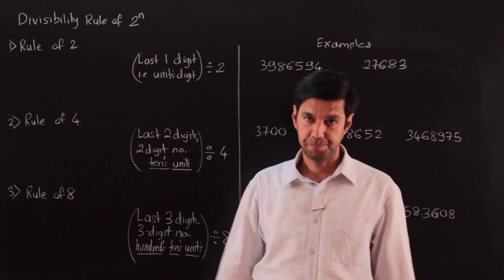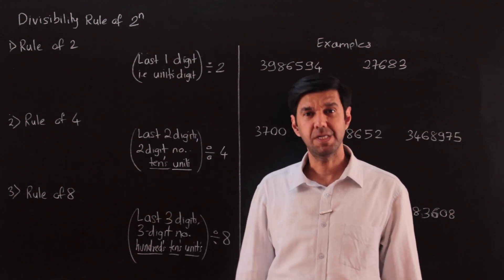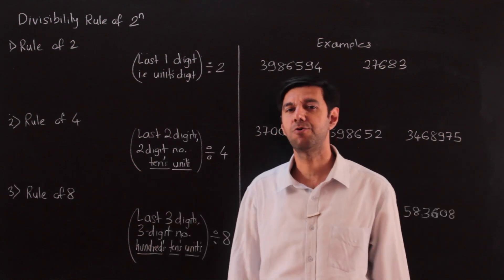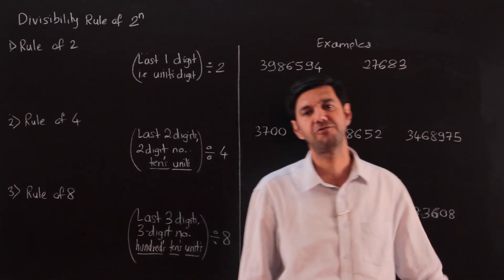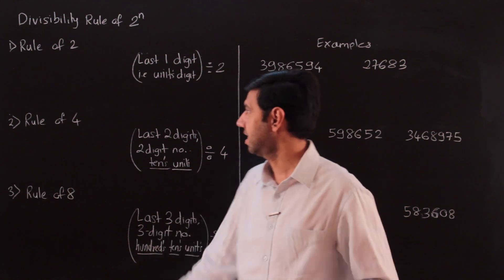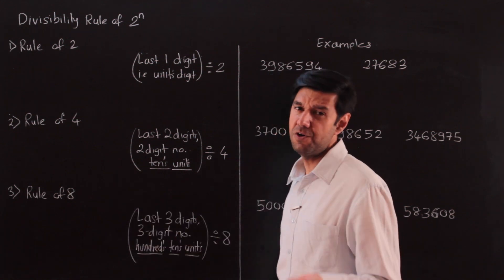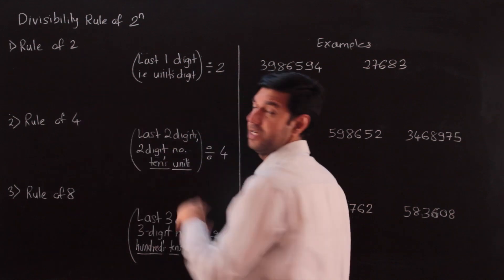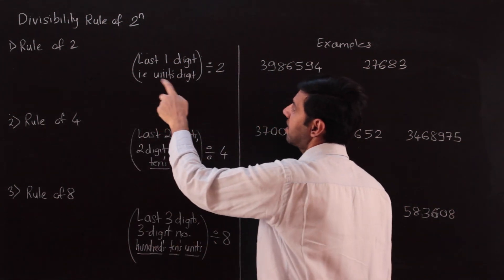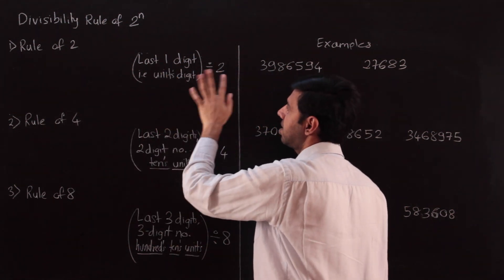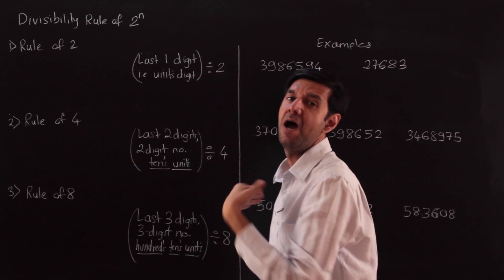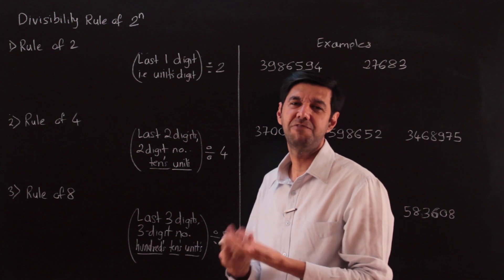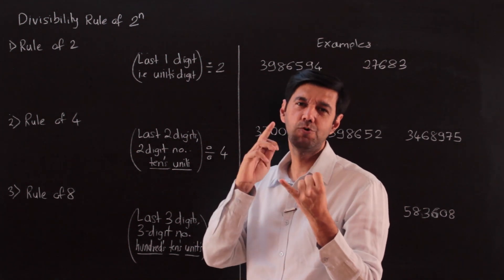Powers of 2 — that is 2, 4, 8, 16. We can extend the rule but we would not need to go beyond 8 or 16 in most cases. The rule of 2: is a number divisible by 2? You just check the unit digit — the last one digit. If that is divisible by 2, the number is divisible by 2. In other words, it just needs to be an even number; the unit digit needs to be 2, 4, 6, 8, or 0.